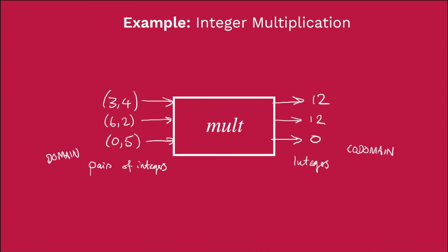So as a bit of notation, we say that this script ℤ means the set of all integers. And we denote pairs of integers by ℤ with a superscript 2 and we denote integers with just this ℤ again. So now we have the domain and the codomain, being this and this. And we use this notation, mult as a function from this to this.